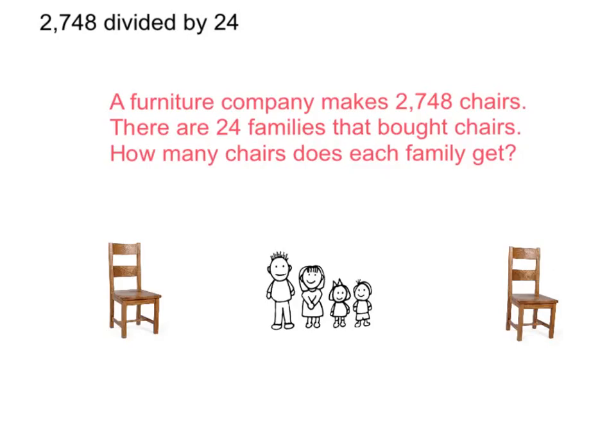2,748 divided by 24. Our word question is: a furniture company makes 2,748 chairs. There are 24 families that bought the chairs. How many chairs does each family get? So first, our question tells us that we have 2,748 chairs.